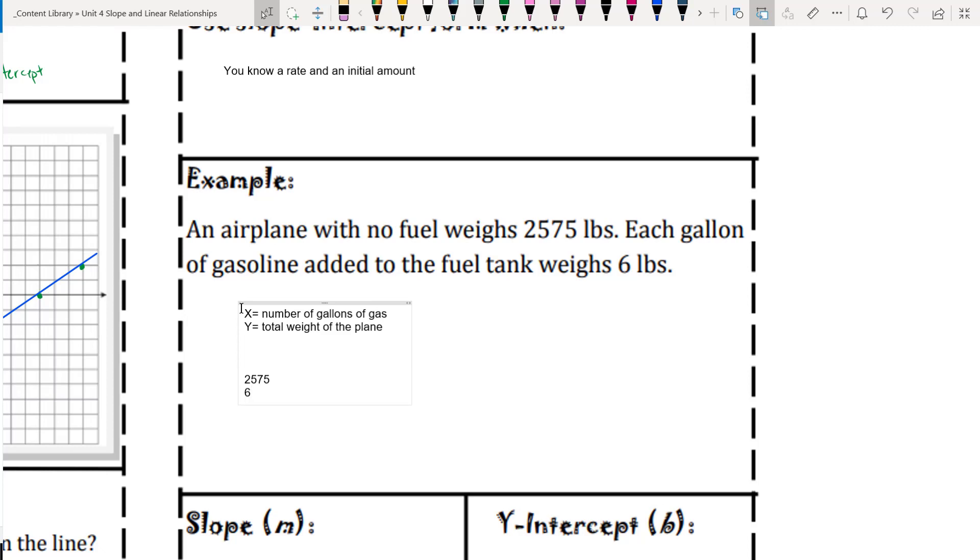And then we've got 6 pounds. Is that your rate, your slope, or is that your y-intercept? So let's look for clues. It has no fuel here. Each gallon adds 6 pounds. So that should tell you right there.